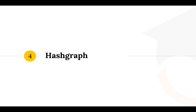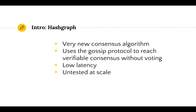Last is Hashgraph, a very new consensus model that only came out a couple of months ago. It uses the gossip protocol to reach verifiable consensus without voting. All nodes in the network are at all times telling all other nodes everything that they know has happened, and based on that, the other nodes virtually vote on the certainty of events happening. It'll be easier to explain on the next slide. Hashgraph has low latency, but it's very untested at scale.